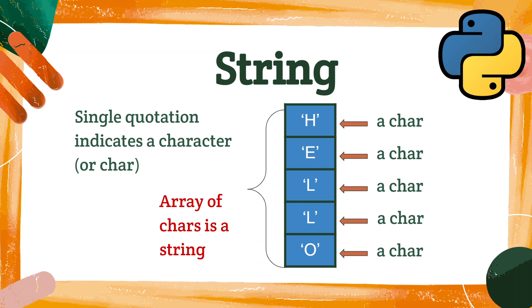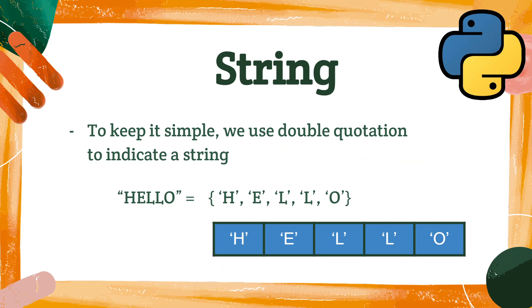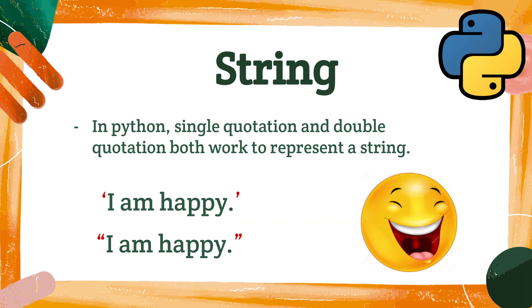String is an array of characters. Array is a series of data in the same type. In this diagram, each cell stores a character. These five characters combined together becomes a string. We use single quotations to indicate a character. As you can see in this diagram, each letter has single quotations — this means character, or we simply say char. H, E, L, L, O — each is a char, but when put together in an array, it becomes a string.